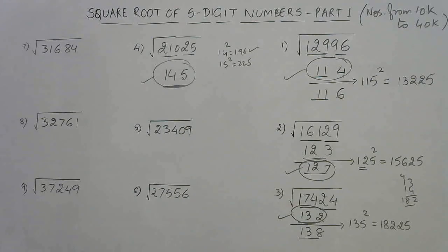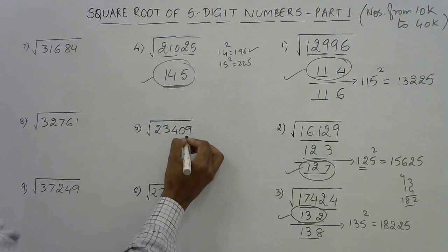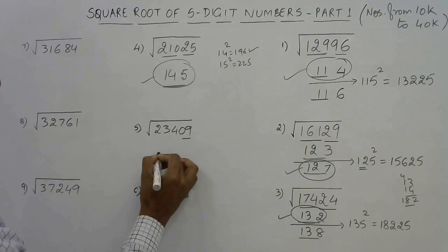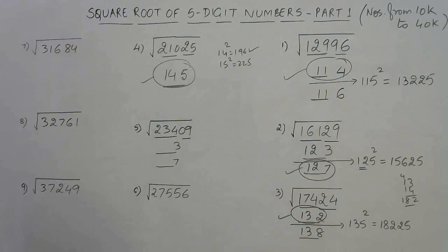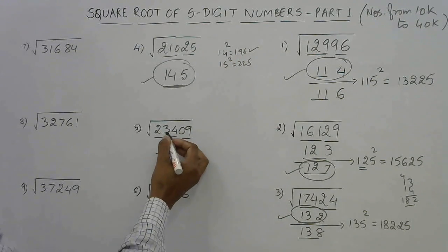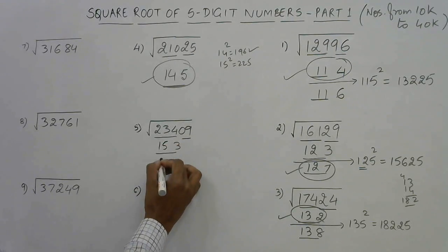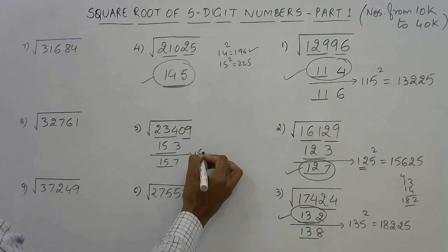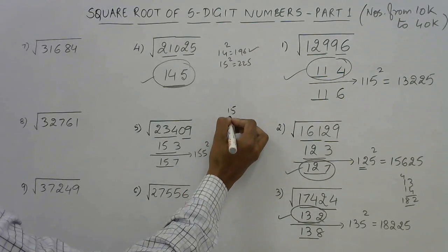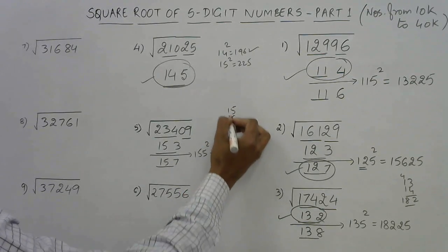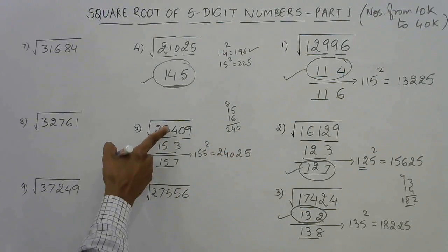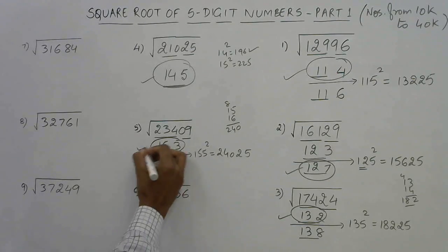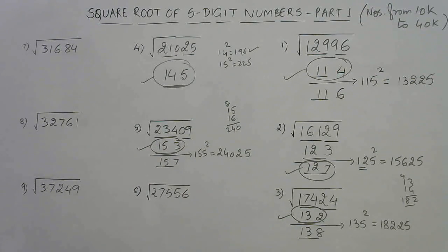Another example ending with 9: the answer ends with 3 or 7. The triplet is 234: 15² = 225 is just below 234, so 15 is the remaining part. Options: 153 or 157. Intermediate: 155². Find 15 × 16 = 240, append 25 → 24025. Since the original number is smaller than 24025, the answer is the smaller one: 153.